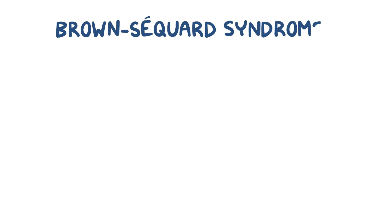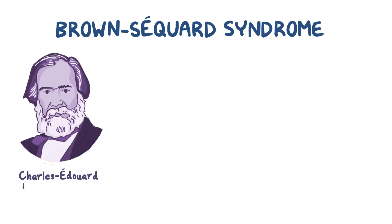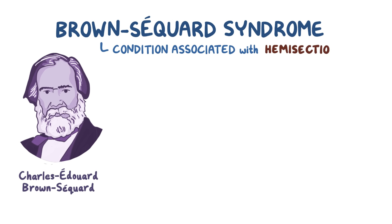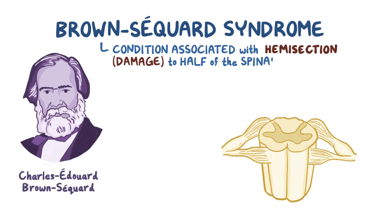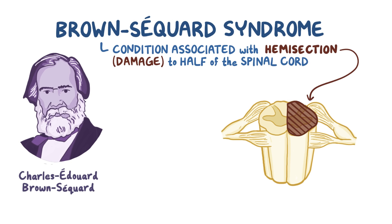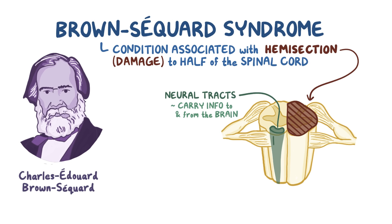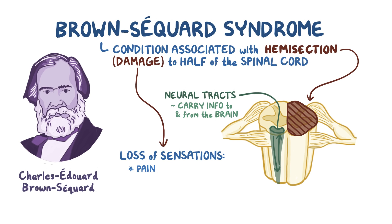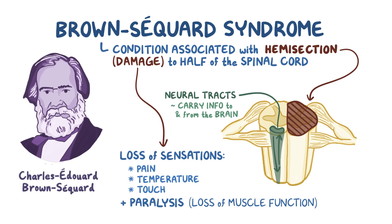Brown-Séquard syndrome, first described by the physiologist Charles-Édouard Brown-Séquard, is a condition associated with hemisection or damage to one half of the spinal cord. The hemisection damages neural tracts in the spinal cord that carry information to and from the brain. This results in the loss of sensations like pain, temperature, and touch, as well as paralysis or loss of muscle function in some parts of the body.